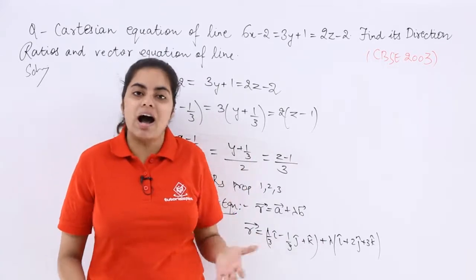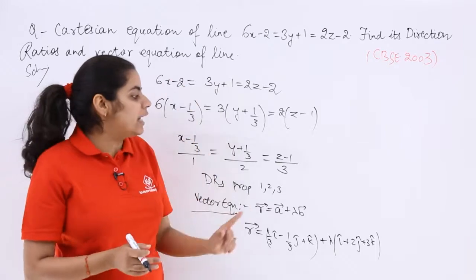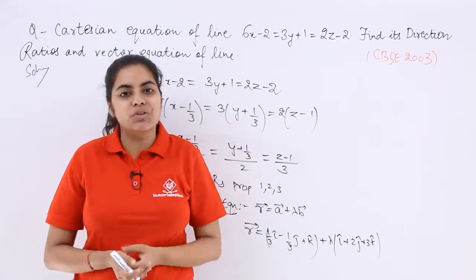So this is the answer. R is the required position vector. So you see we have found out the vector equation of line also and direction ratios also.